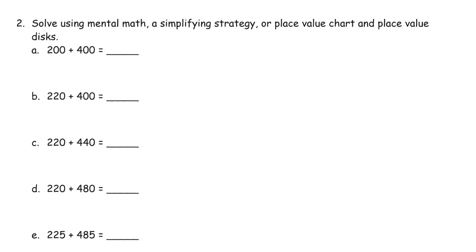And we're solving these using mental math, a simplifying strategy, which would be like making the next hundred, or place value chart, that's a HTO chart, and place value disks, that's the chip model. So 200 plus 400, we can just say that's a one-step mental math one. But here we have to add hundreds and tens.